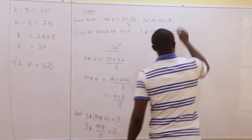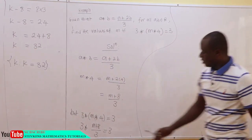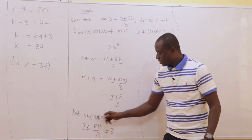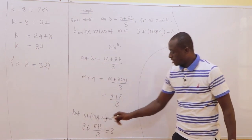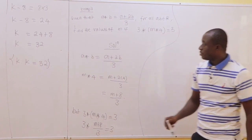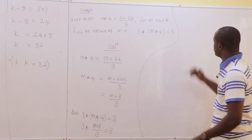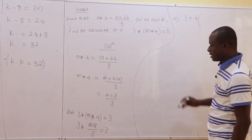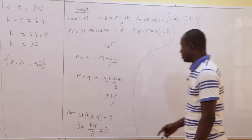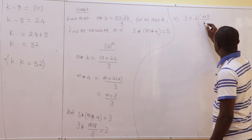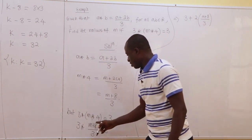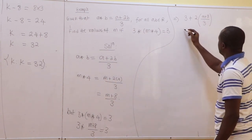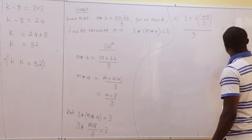Now 3★(m★4) = 3. We have two elements: 3 and (m+8)/3. Using the rule with a=3 and b=(m+8)/3: [3 + 2×(m+8)/3] / 3 = 3. So the expression becomes [3 + 2(m+8)/3] / 3 = 3.